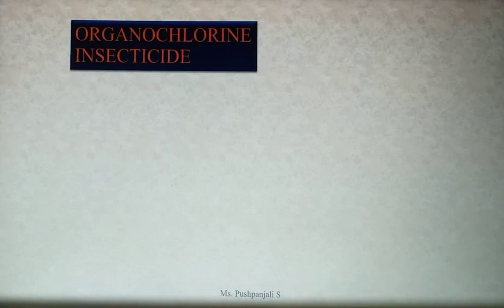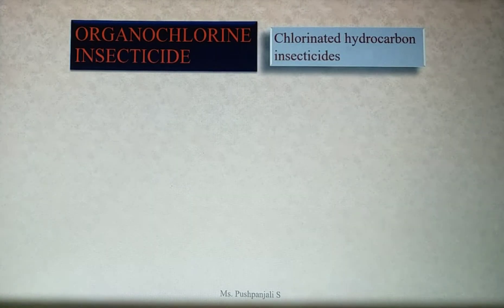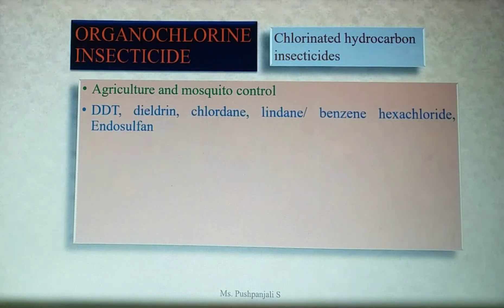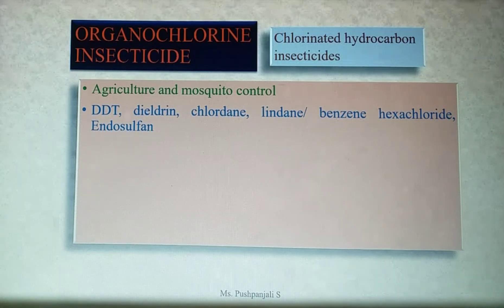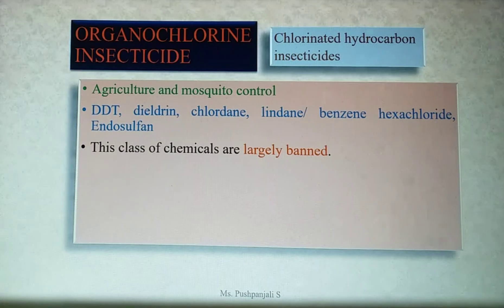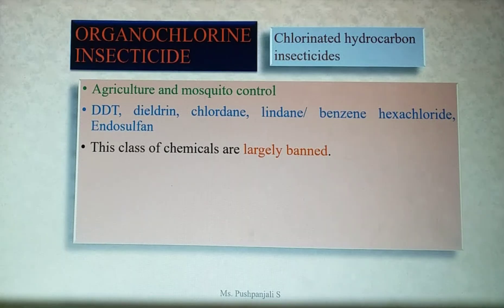Organochlorine insecticides are chlorinated hydrocarbon insecticides. They are used extensively in agriculture and mosquito control. Representative compounds in this group include DDT, dieldrin, chlordane, lindane or benzene hexachloride, and endosulfan. This class of chemicals are largely banned, although a few are still registered for use in many countries.